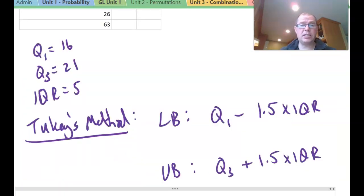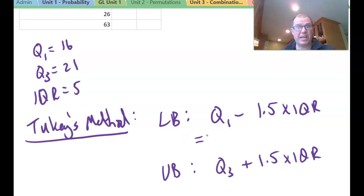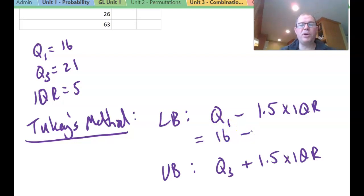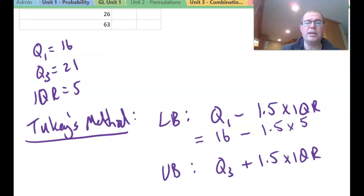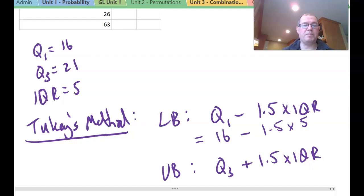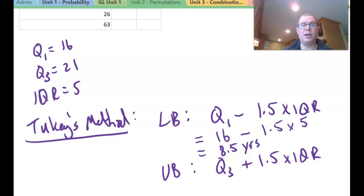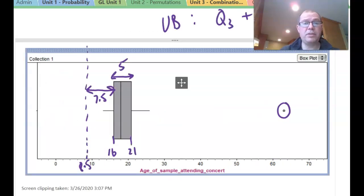Tukey's method is considered a standard approach for finding an outlier — the most mathematical one often used for box plots. For the lower bound, you take Q1, the lower quartile, which in this case is 16, and subtract 1.5 times the interquartile range. 1.5 times 5 is 7.5. So 16 minus 7.5 gives us 8.5 years as the lower boundary.